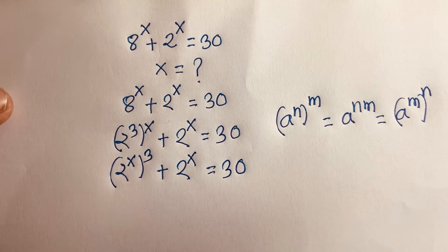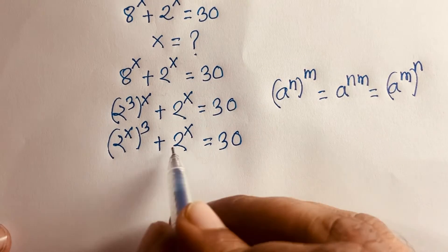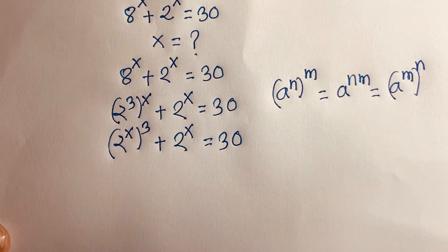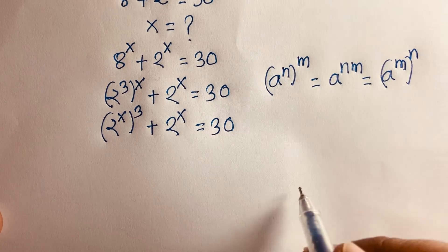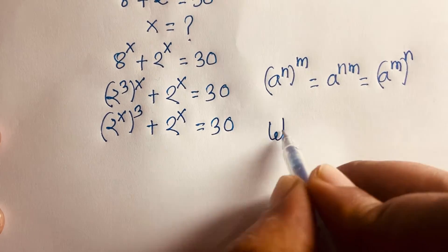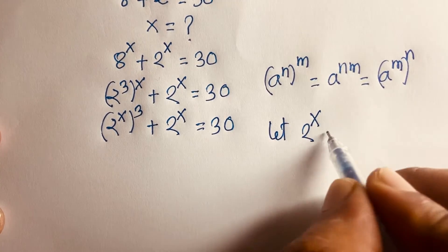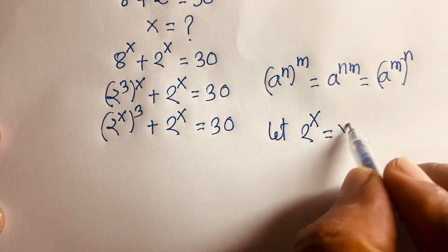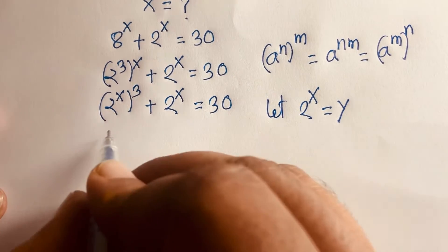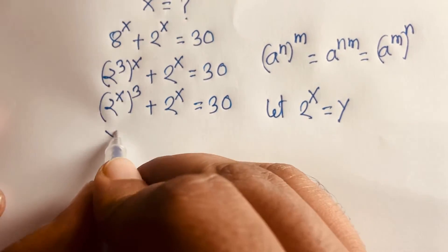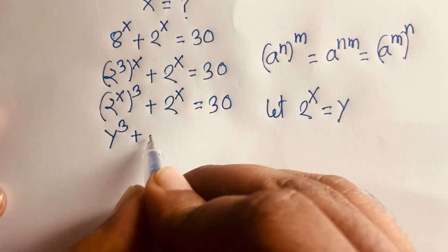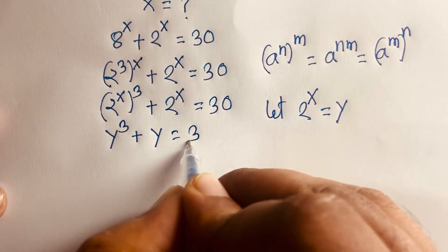Notice that 2 to the power x appears in both terms. So let's substitute: let 2 to the power x equal y. Then we can write y to the power 3 plus y is equal to 30.